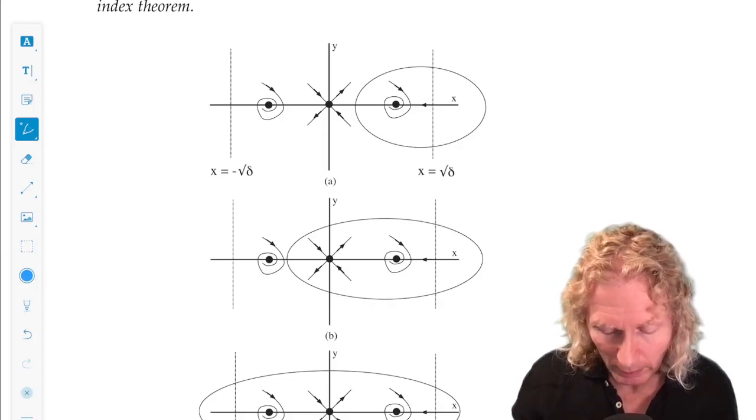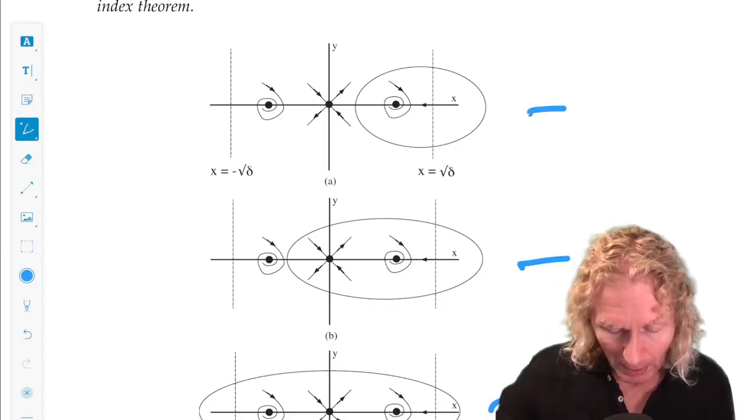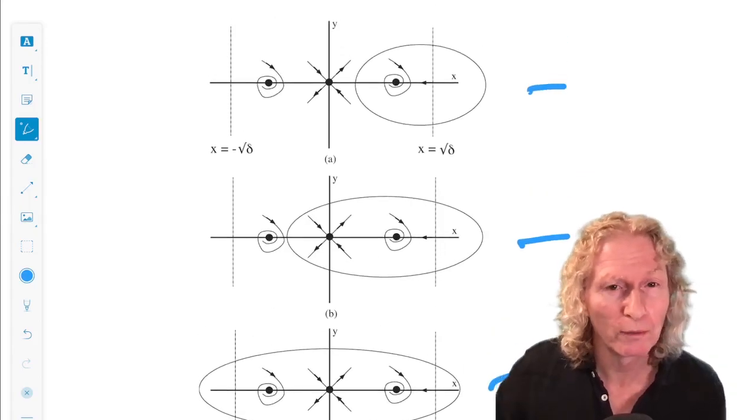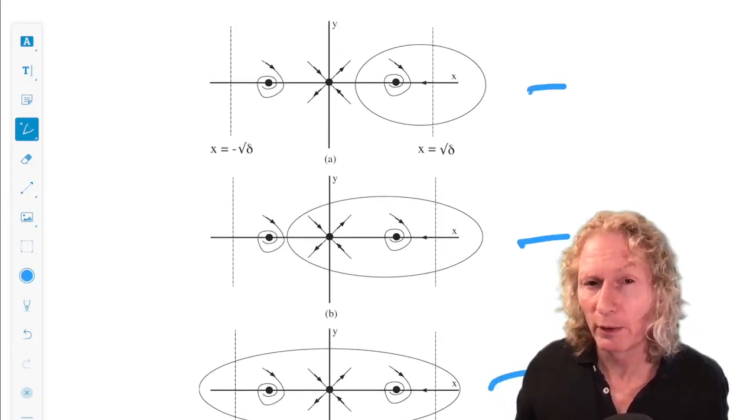So I've drawn three possibilities here. And they have to contain at least one fixed point. But we know all the fixed points are hyperbolic.